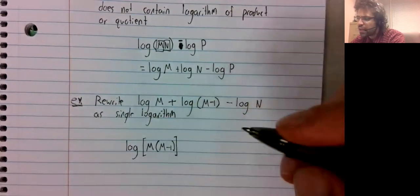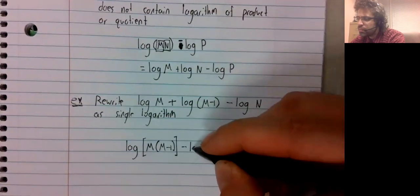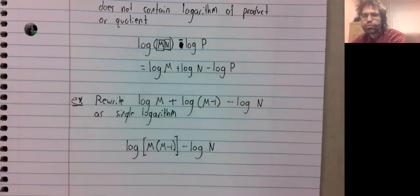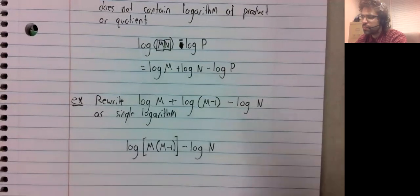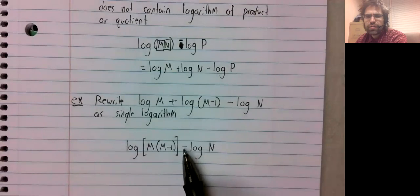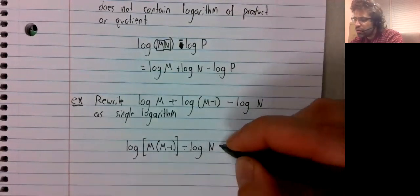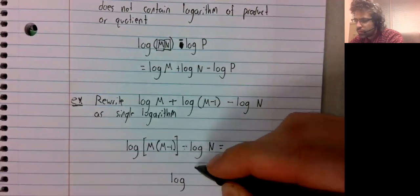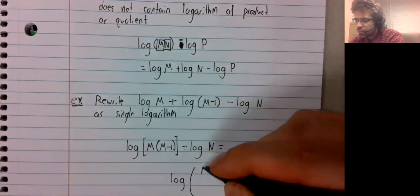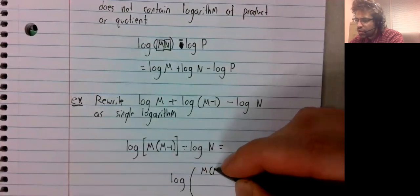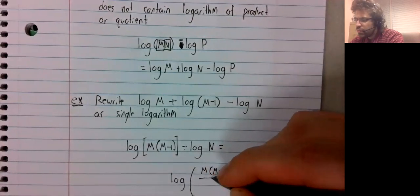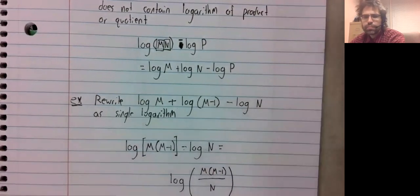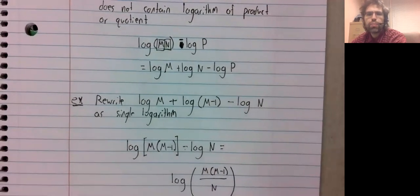We turn that into the logarithm of a product. Now we have the difference of logarithms. We turn that into the logarithm of a quotient.